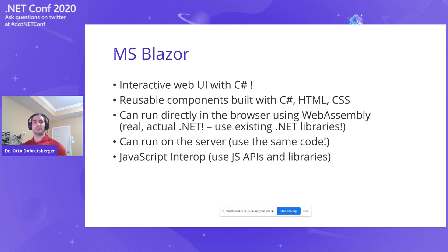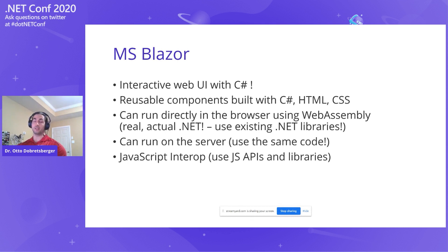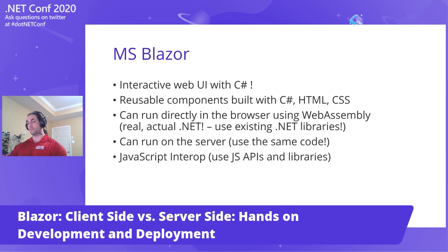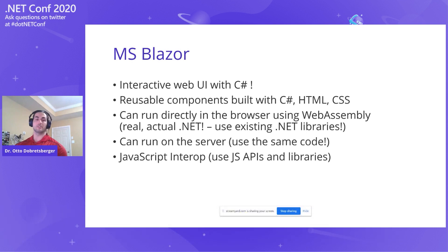We can run directly in the browser using WebAssembly, and that is actual real .NET running there. We can use our existing .NET libraries. We can optionally also run on the server, but we can reuse the same code. So if you have a client-side Blazor app and you later find out it would run better server-side, it's not a big deal to change it because the code doesn't change — and I'll show that as well.